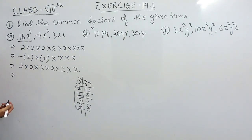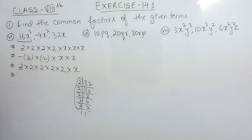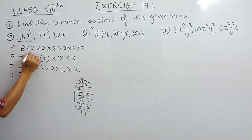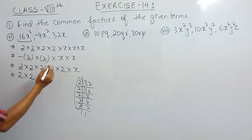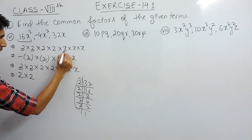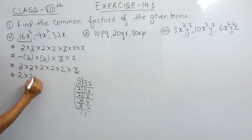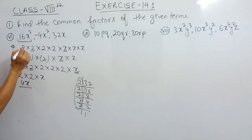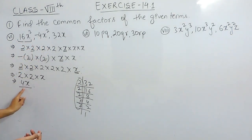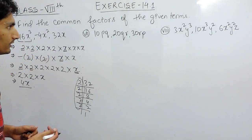Now let's find the common factors. 2 is present in all three terms, so 2 is the first common factor. There is also one x present in all three terms. So 4x is the common factor for all three terms.